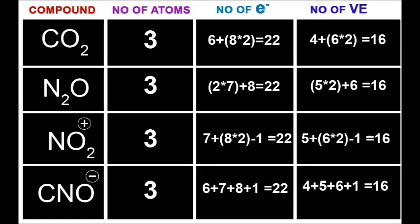Let us see NO2 plus. Here, please remember one thing: it has a positive sign, which means it's a cation. It has lost 1 electron, so you should subtract 1 from the total value.